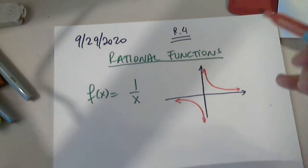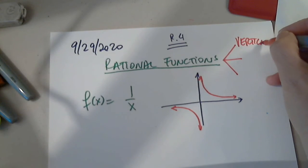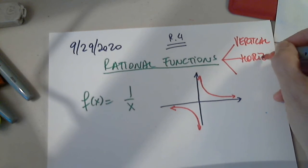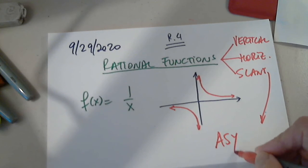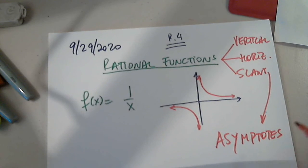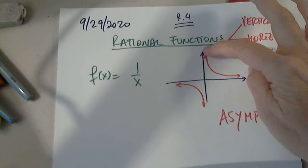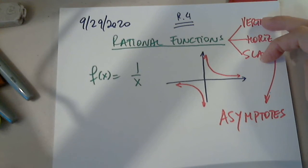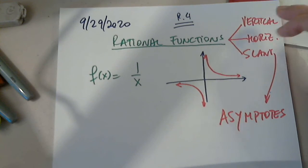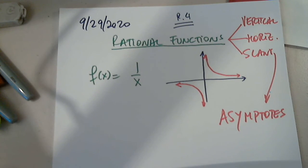These rational function graphs may have vertical, horizontal, or slant asymptotes. To be exact, a rational function cannot have horizontal and slant at the same time. It can have slant and vertical at the same time, and it can have horizontal and vertical at the same time, but not horizontal and slant. If it has horizontal, it cannot have slant. If it has slant, it cannot have horizontal.